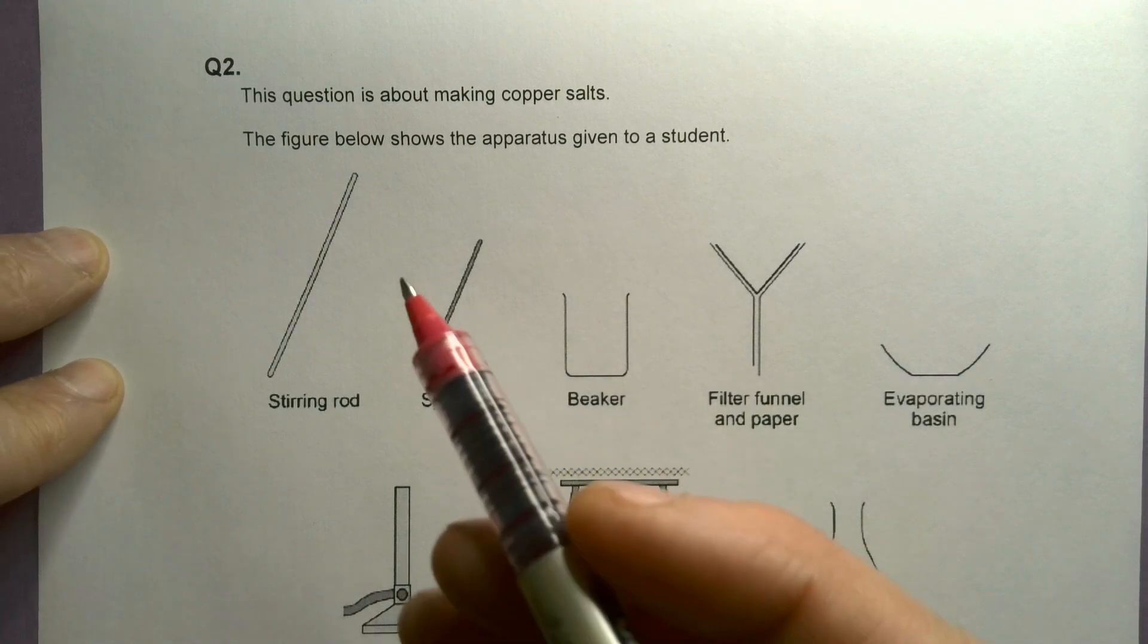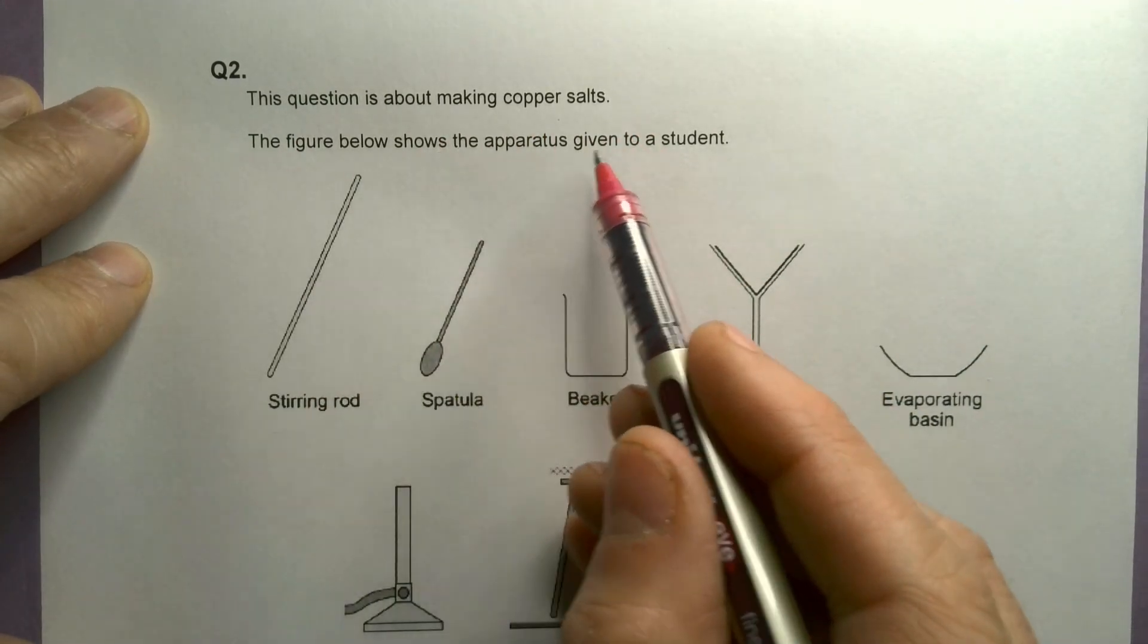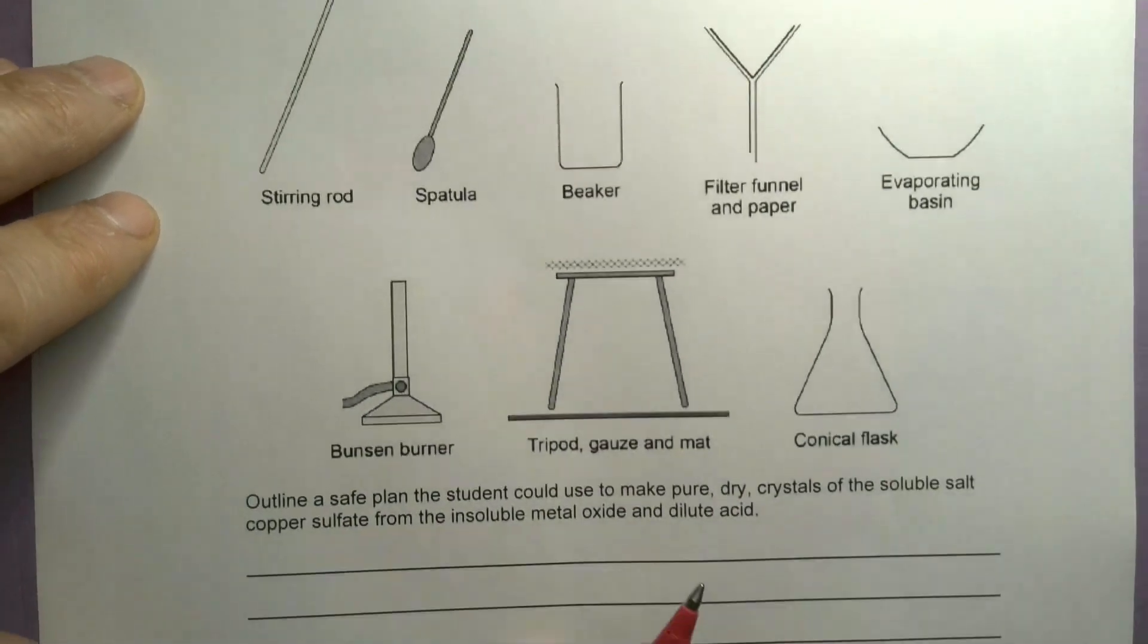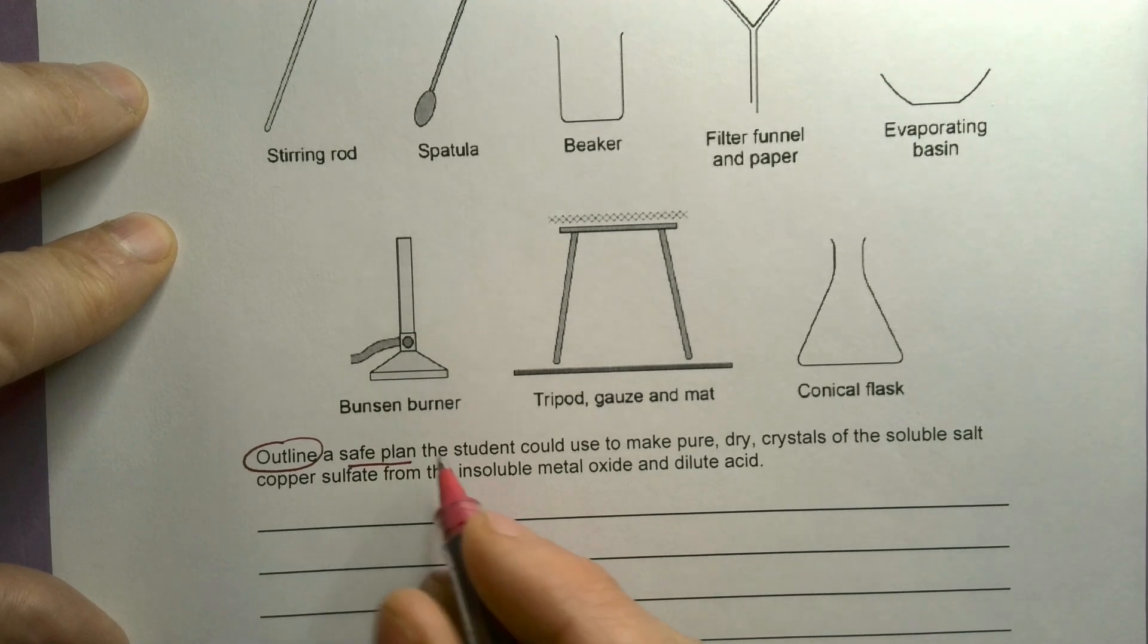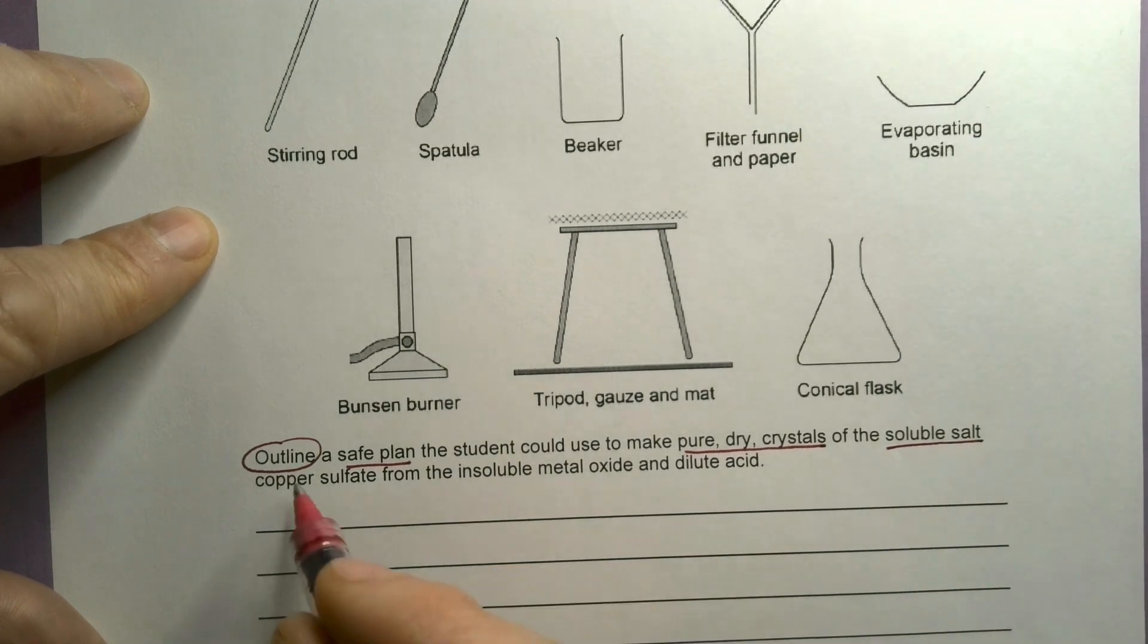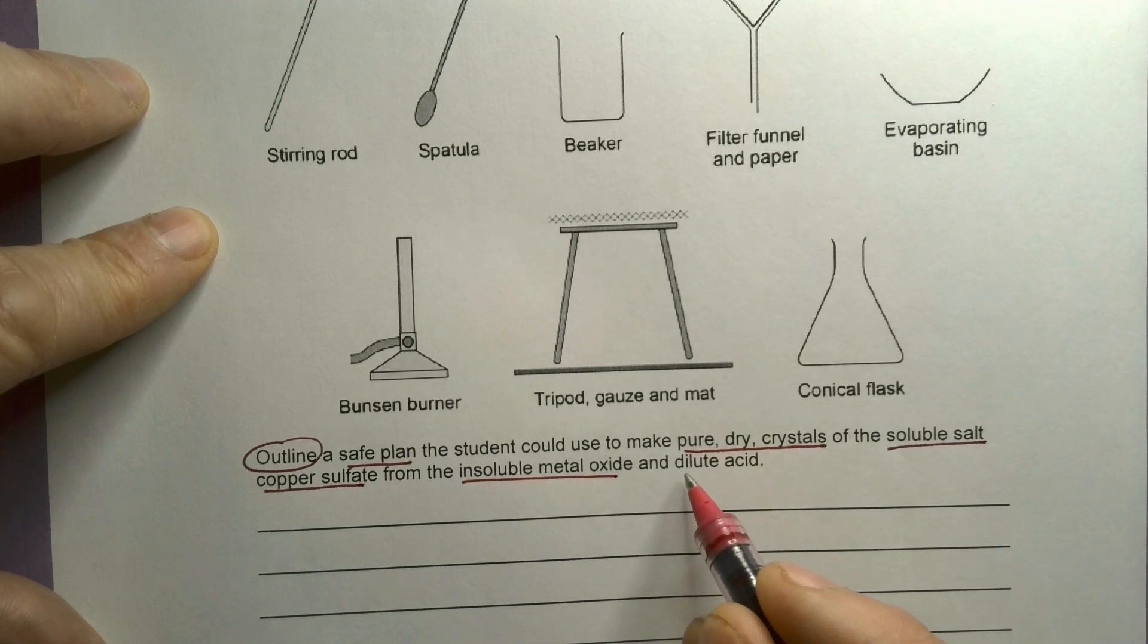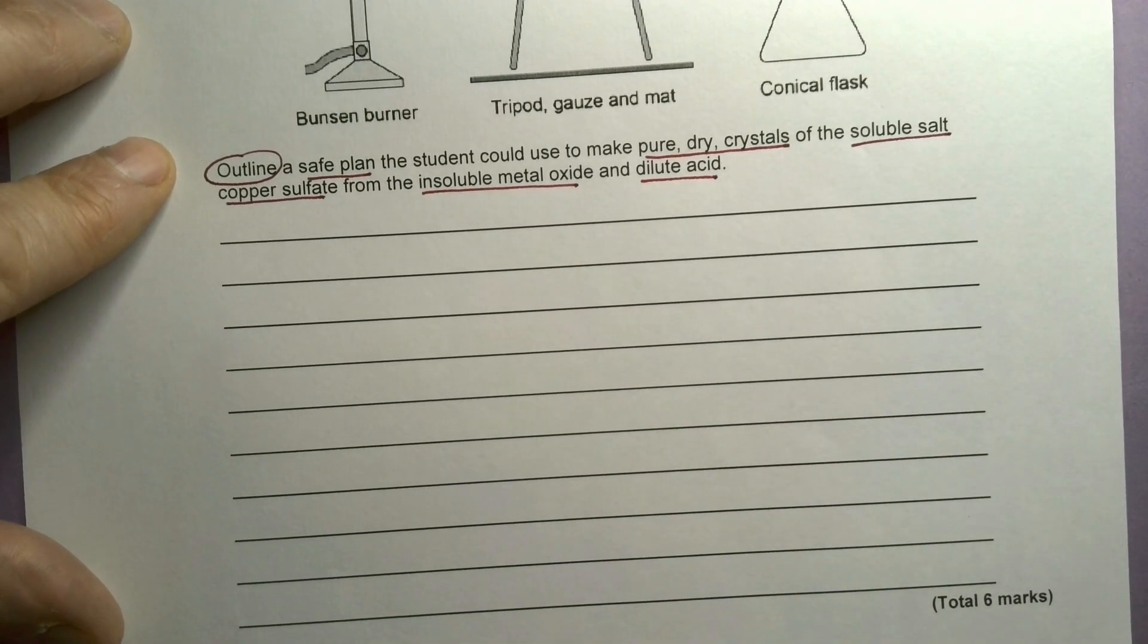Question 2. This question is about making copper salts. The figure below shows the apparatus given to a student. Okay, so they've given you all the apparatus here. You need to outline a safe plan the student could use to make pure dry crystals of the soluble salt, copper sulphate from insoluble metal oxide and dilute acid. And it's worth six marks.